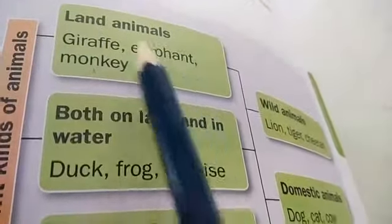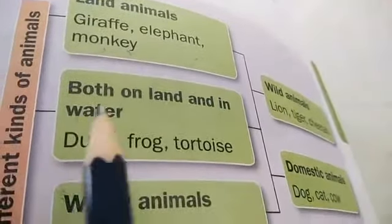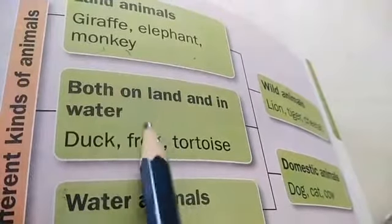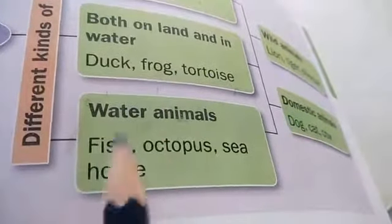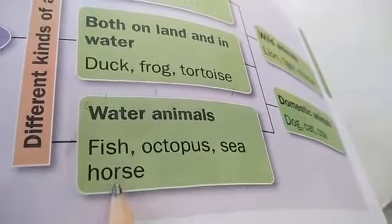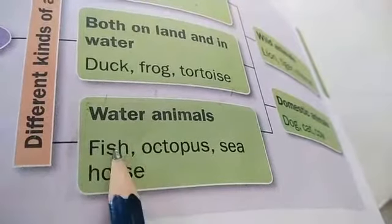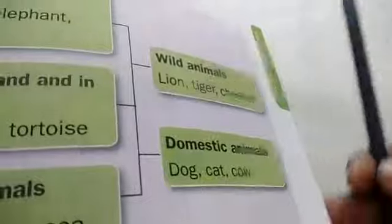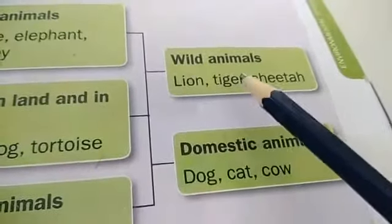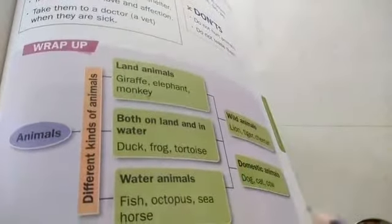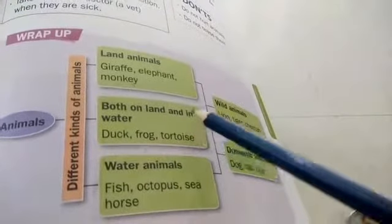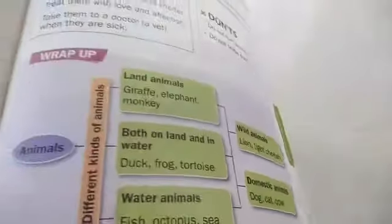Land animals — examples: giraffe, elephant, monkey. Both land and water: duck, frog, tortoise. Water animals: fish, octopus, sea horse. Wild animals: lion, tiger, cheetah. Domestic animals: dog, cat, cow. These are some examples of land animals, land and water animals, water animals, wild animals and domestic animals.